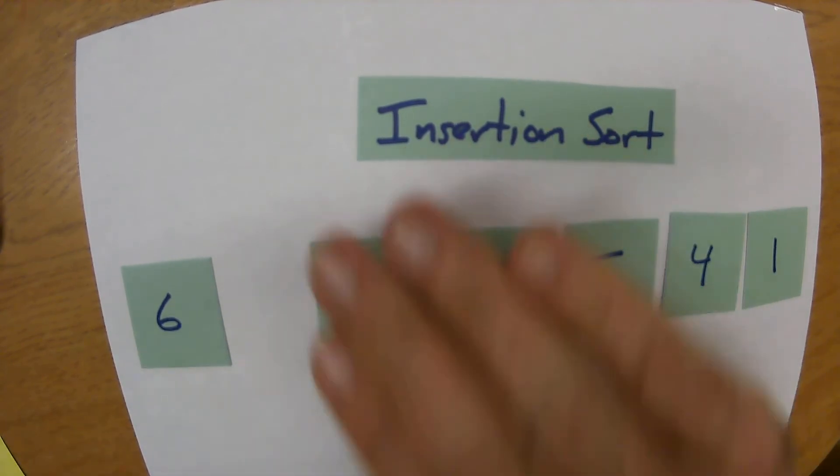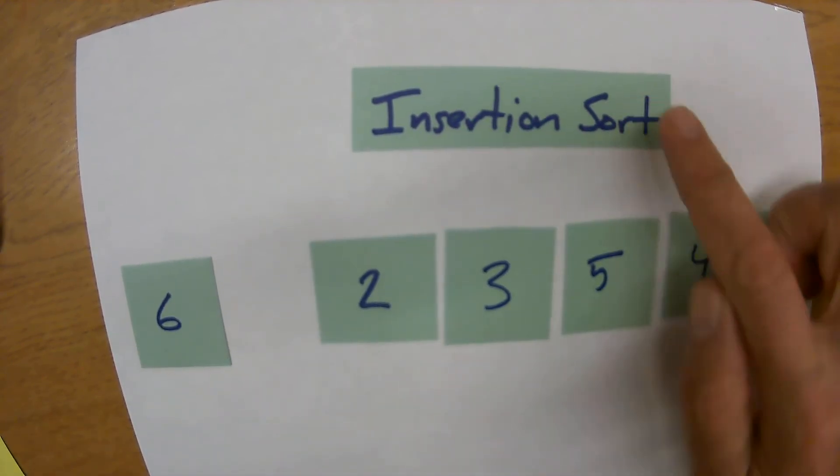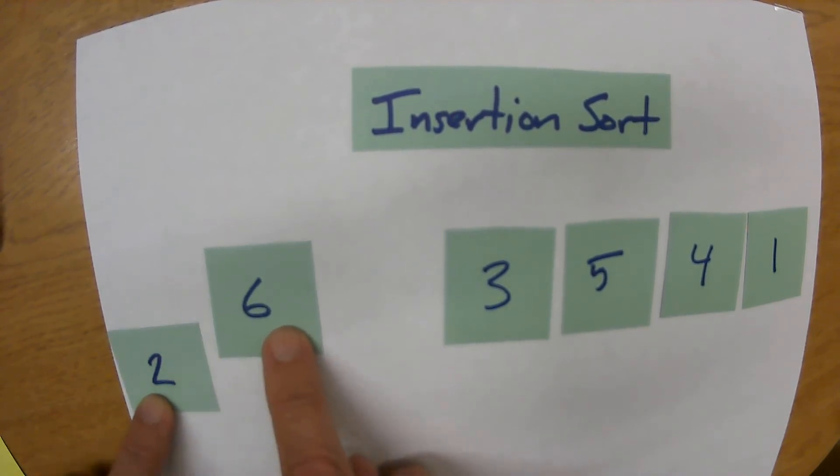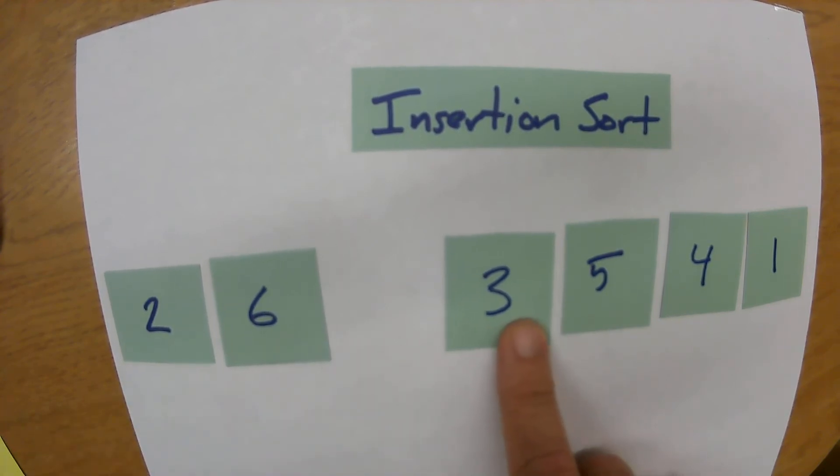So what I'm going to do now is take the very next value and is it lower than the six? Yes, so I will slide it into the six's place and move the six over. Now when I go to the next one, is it lower than the six? Yes, but we got to keep going. Is it lower than the two? No.